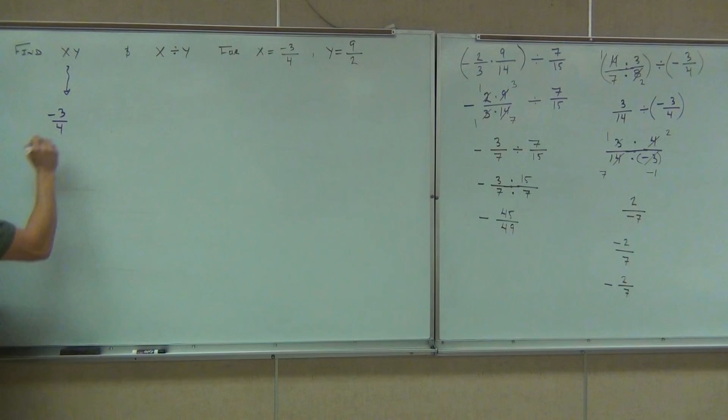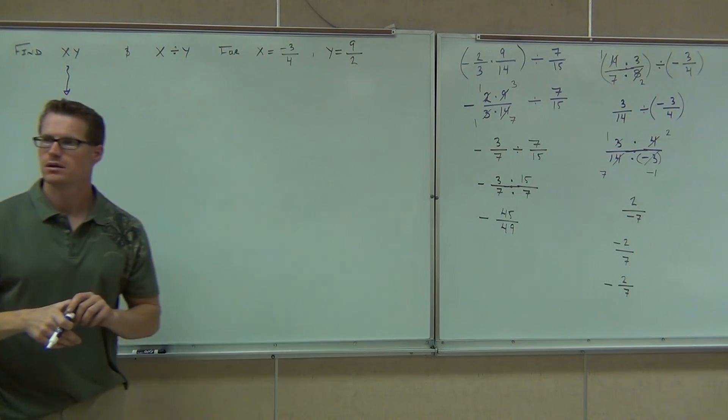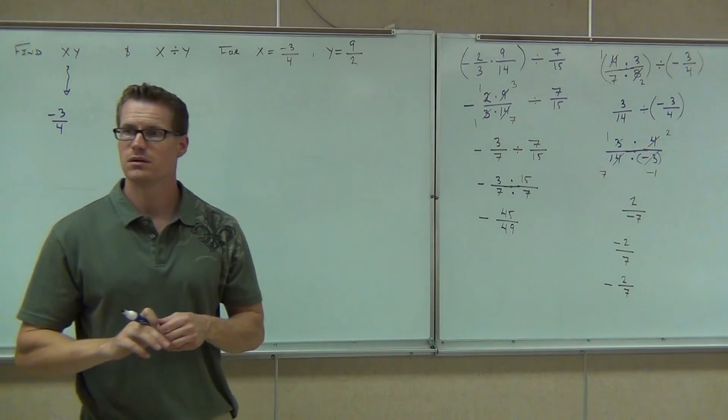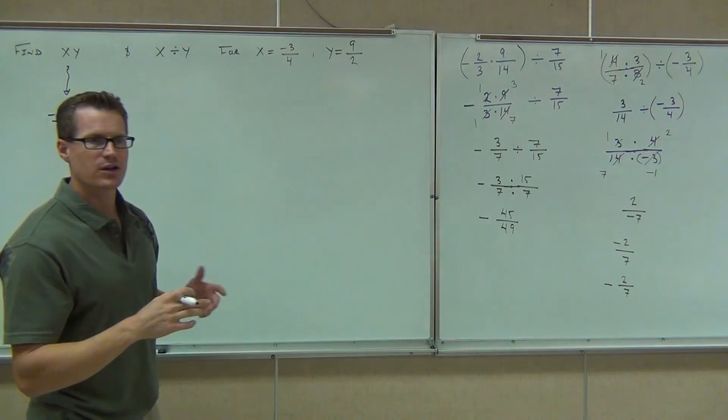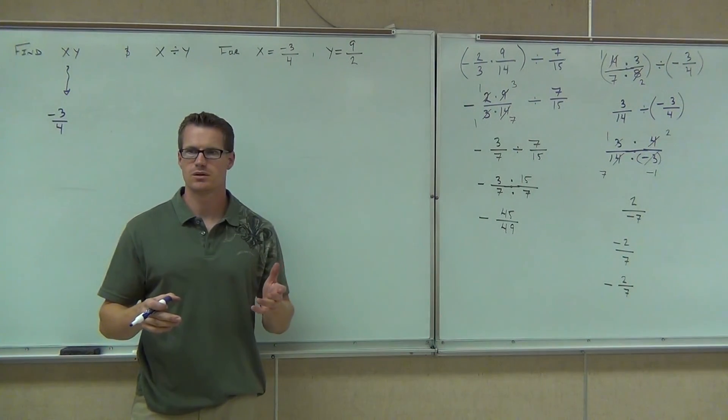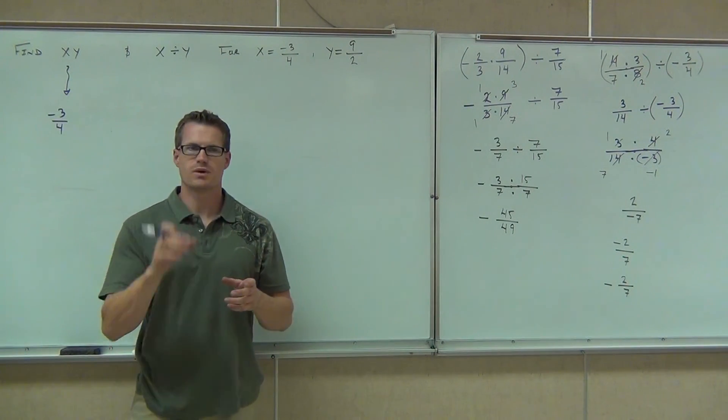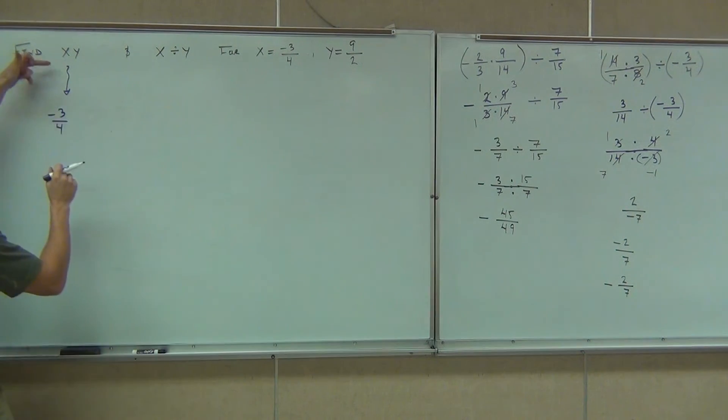We're dividing there? No, times. Times. Okay. How do you know it's times? How do you know it's multiplication? Yeah, that's what that means. We have x·y right there. That means x times y. So x is negative three-fourths. y is nine-halves. Can you do that? Great.